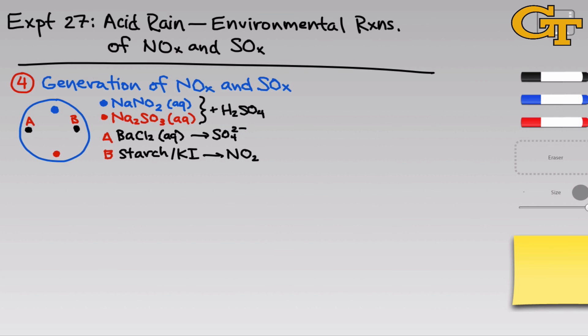The BaCl2, as we've seen already, is just a sulfate detector. If sulfate is present or forms in this droplet, then we'll see BaSO4 precipitate out.